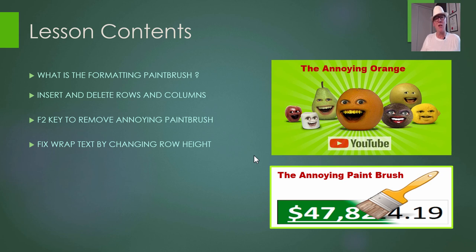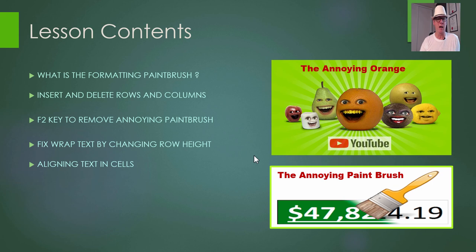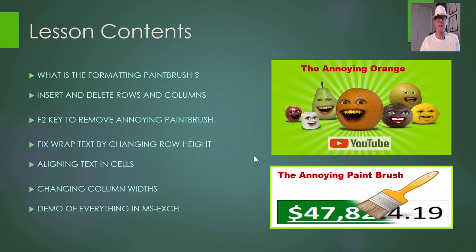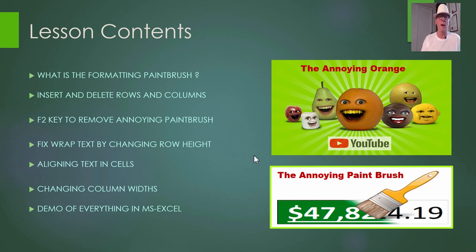We're also going to fix wrap text — a thing came up with students where wrap text didn't seem to work, and we'll show you how to fix it. We'll cover how to align text in cells, and how to change row heights and column widths. First we'll discuss everything in steps, then at the end we'll go into Excel and do a live demo of exactly what we've been talking about.